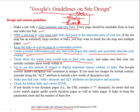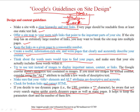Try to use text instead of images to display important names, contents, or links, because Google crawlers do not recognize text content within images. If you must use images for textual content, consider using alternate text to describe those images. Make sure that your title tags and alternate description attributes are descriptive and accurate. Check for broken links and correct HTML. If you decide to use dynamic pages where the URL contains a question mark character, be aware that not every search engine spider crawls dynamic pages as well as static pages. It helps to keep parameters short and few in number.